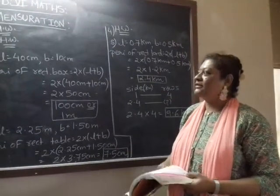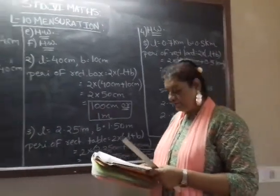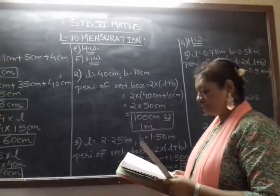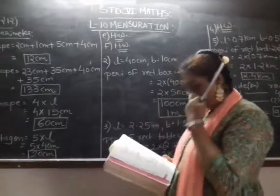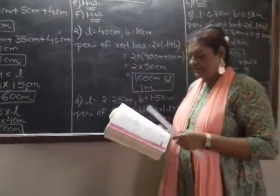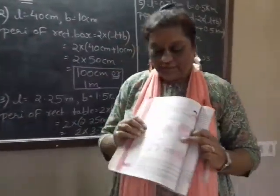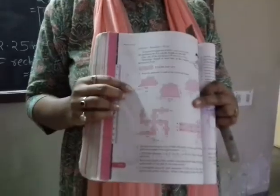Okay children, today we are going to see exercise 10.1 on page 2.2 of your textbook. Question number 1, find the perimeter for the following figures. You can see some of the figures are given with the measures written on it.